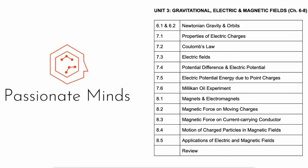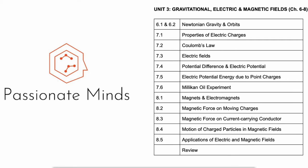So now for unit 3, which is gravitational, electric, and magnetic fields. Chapter 6 is about gravitational fields, so learning about the theory and then applying it to solve problems involving orbits. Chapter 7 involves electric fields, and then chapter 8 is covering magnetic fields.